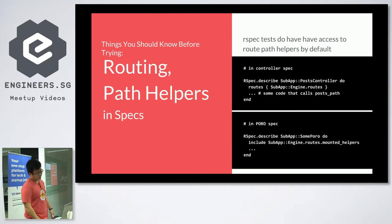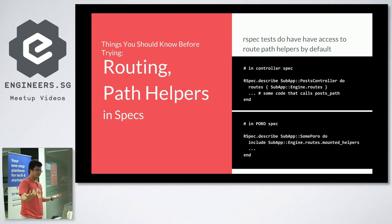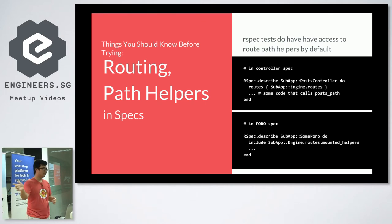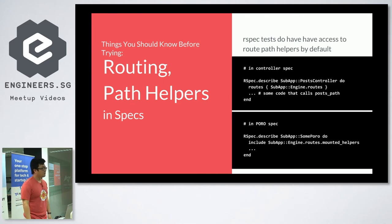The next thing to know is about routing and path helpers, specifically in specs. Because if you write RSpec specs, your engine's path helpers are not available by default — which is normally what you get in a normal Rails app controller spec. You have to include this line: `routes { EngineModule::Engine.routes }`. That will include your engine's routes and path helpers. That's for controller specs. Now, if you're writing a spec for a plain old Ruby object that needs path helpers, the way to do that is to include the same thing but with `.mounted_helpers`. I actually couldn't find documentation about this — I figured it out by trial and error. You're welcome.